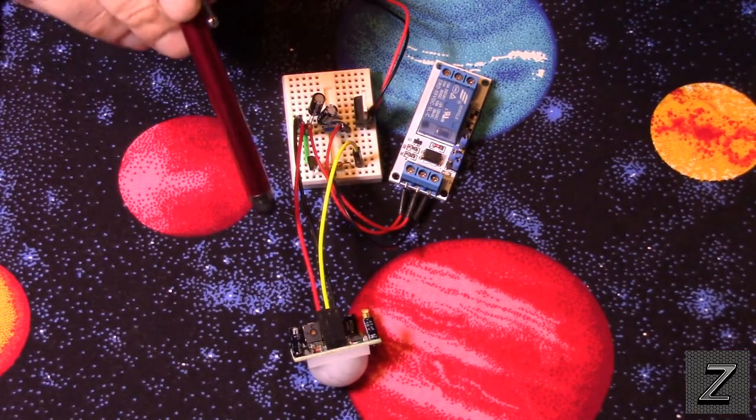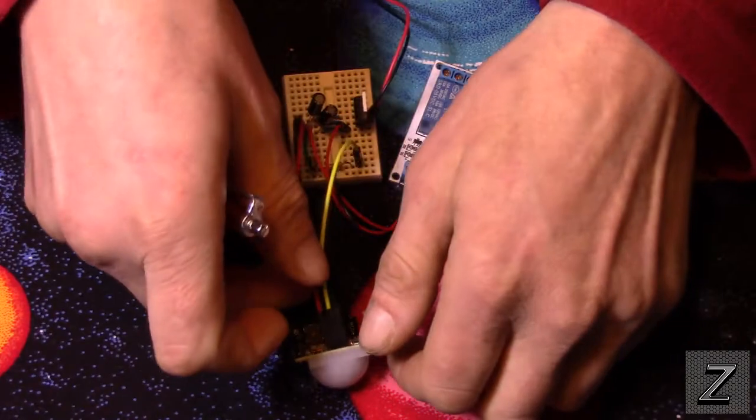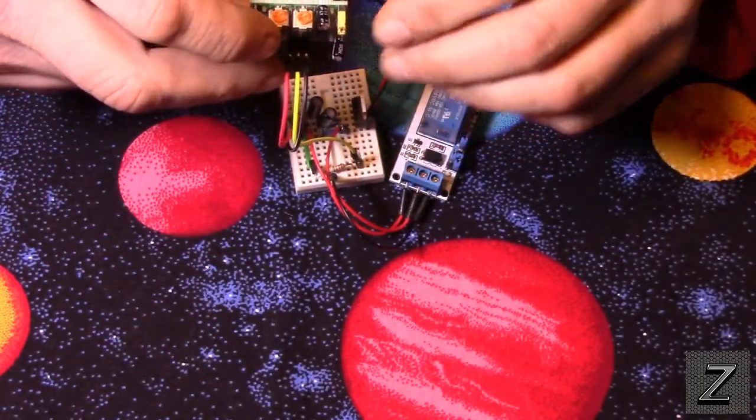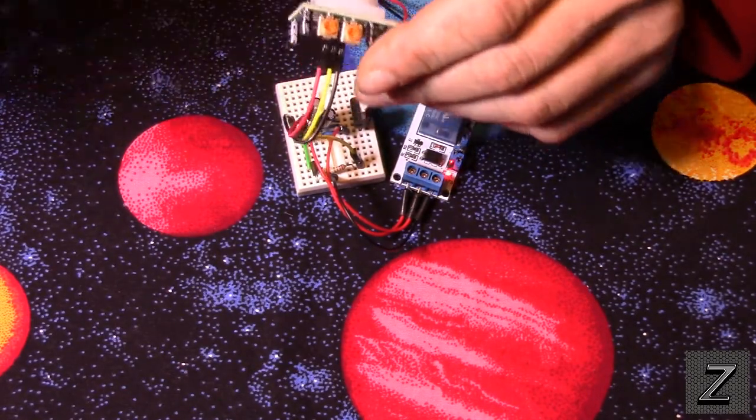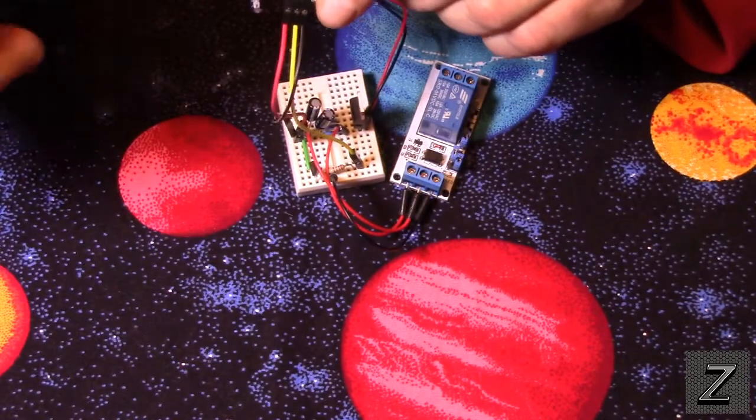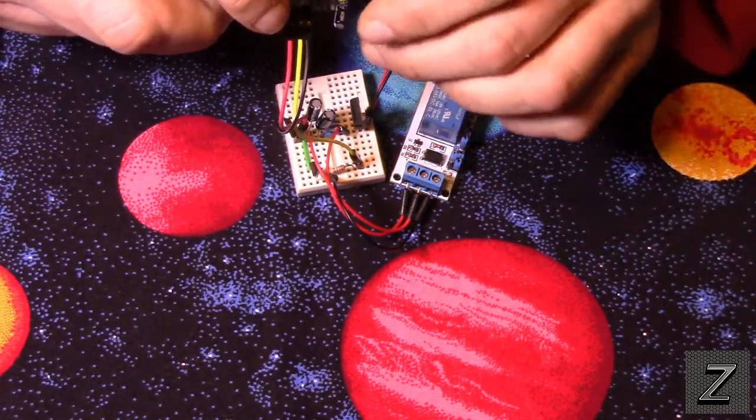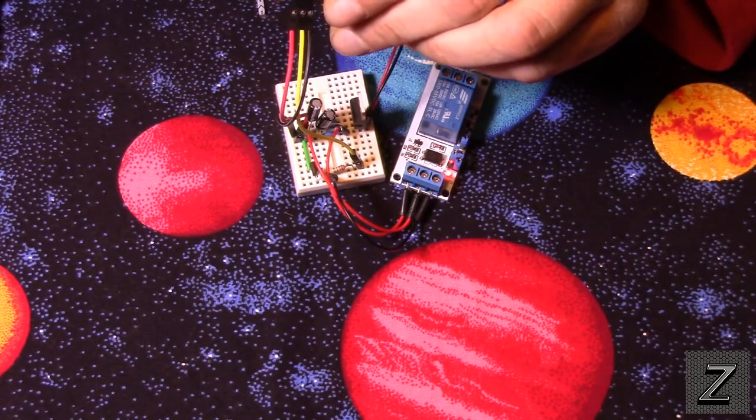Now, on the PIR sensor itself, let me trigger it again, there are two potentiometers. Now, I've got both of these set to the minimum right now, and because I've got it pointed at me, it's going to keep going off and on. Once I point it away from me, it'll quit doing that.